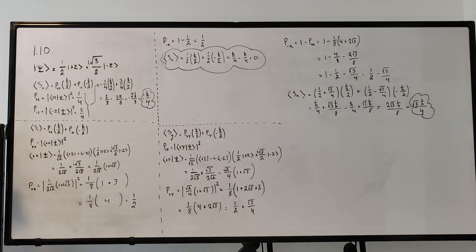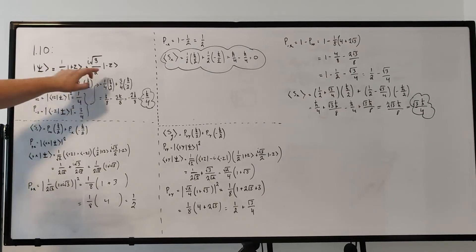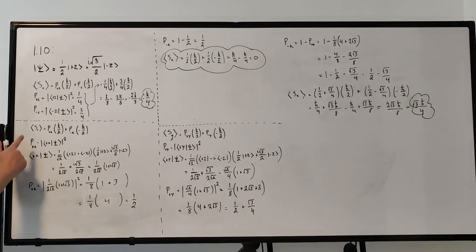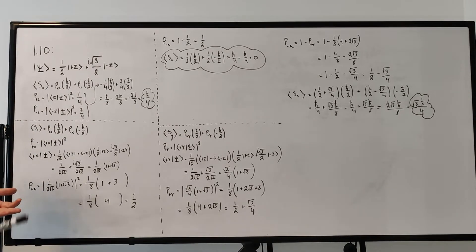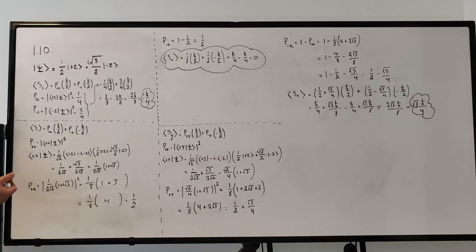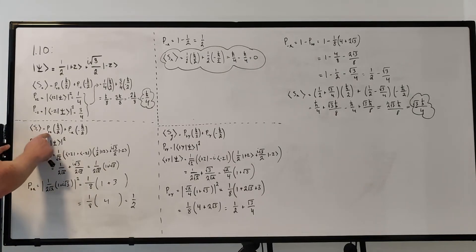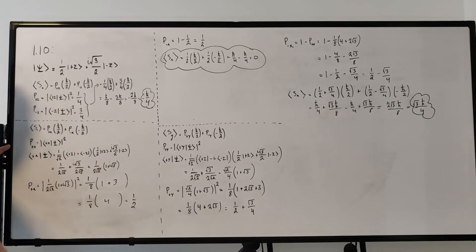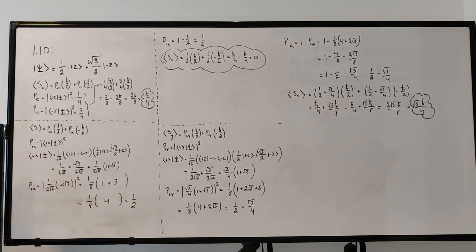Let's move on to the x component — this is going to be a little trickier. Since our state is expressed in the z basis, we're going to have to express the |+x⟩ and |−x⟩ states in the z basis, which we already know from the book. The expectation value is the probability of +x times ℏ/2, plus the probability of −x times −ℏ/2.